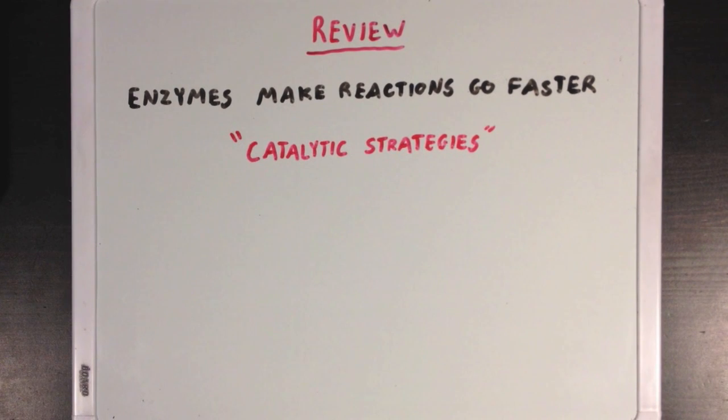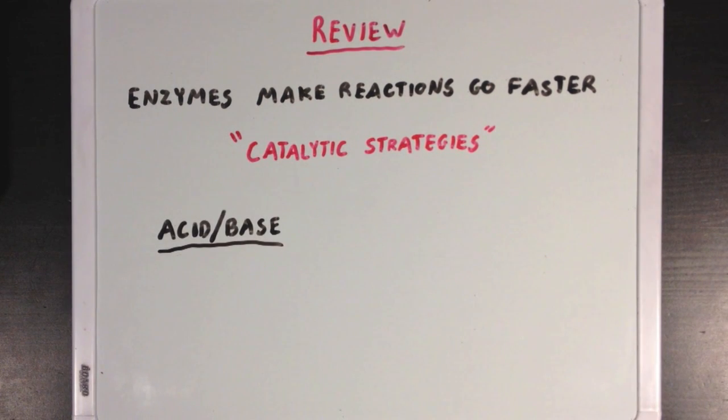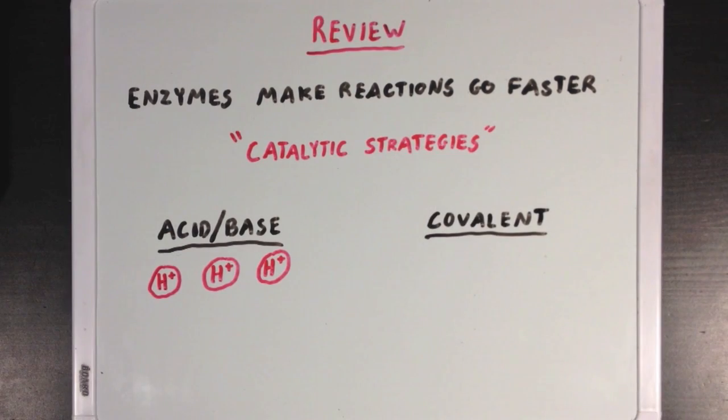Now there are lots of different catalytic strategies that enzymes use, but a couple of the key ones are acid-base catalysis, where enzymes use their acidic or basic properties to make reactions go faster by helping out with proton transfer. There's also covalent catalysis, where enzymes covalently bind a reacting molecule to help with electron transfer.